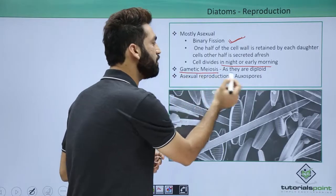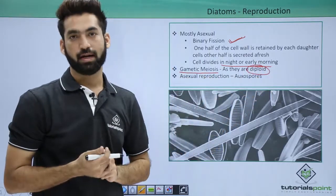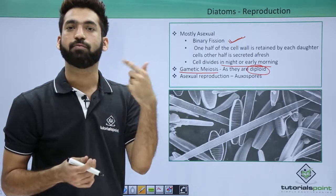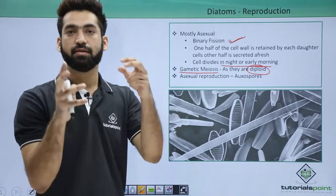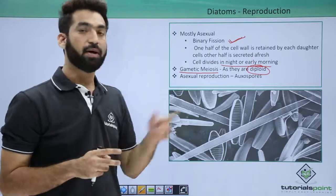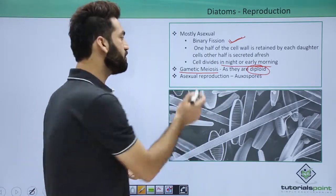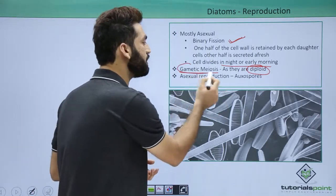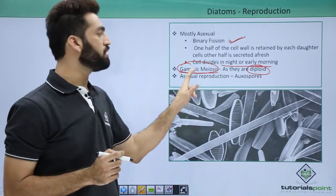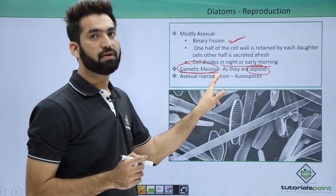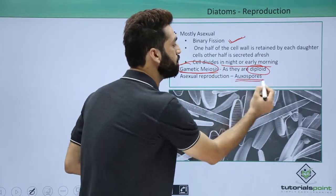Diatoms have gametic meiosis because they are diploid. Remember dinoflagellates were haploid — when they were haploid they maintained haploidy and the zygote performed meiosis. But in diatoms, being diploid, meiosis occurs for the formation of gametes, so they have gametic meiosis. They also have a very important asexual spore responsible for asexual reproduction called auxospores.